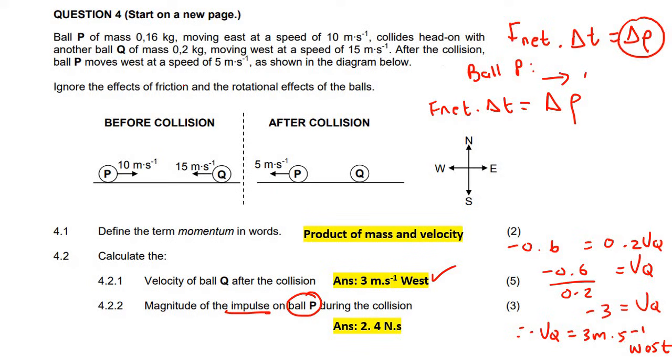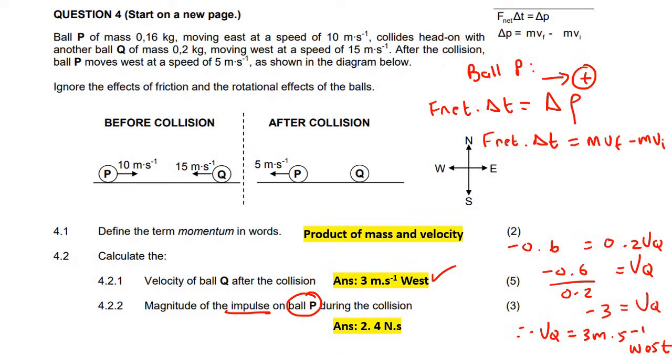The impulse is going to be equal to the change in the momentum, so delta P. Choose a direction as positive. I'm going to choose right as positive again. I'm not going to fill in F net or T. That's what we're trying to calculate. That is the impulse. Now delta P is given to you really nicely on the formula sheet. So MVF minus MVI. Be careful here. We are choosing ball P.